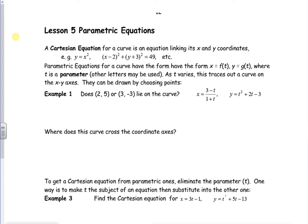So let's have a look at these questions then. It mentions about the parameter here, so that's your t in most cases. So it says does (2, 5) or (3, -3) lie on the curve. Now if it lies on the curve, it will have the same t value.